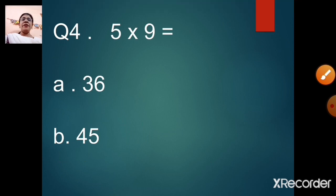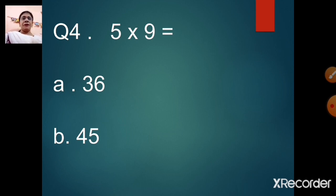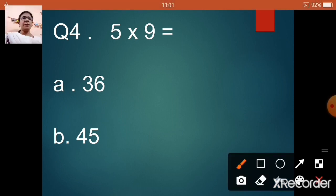Question number 4: 5 nines are — option A: 36, option B: 45. Let us say the table of 5 — 5 ones are 5, 5 twos are 10, 5 threes are 15, 5 fours are 20, 5 fives are 25, 5 sixes are 30, 5 sevens are 35, 5 eights are 40, and 5 nines are 45. Option B, 45.